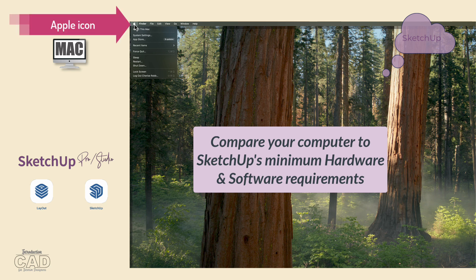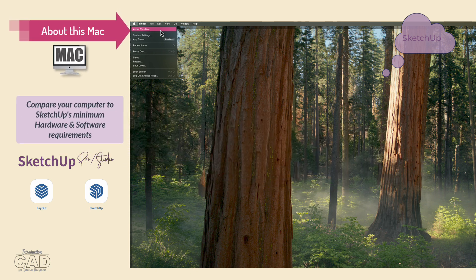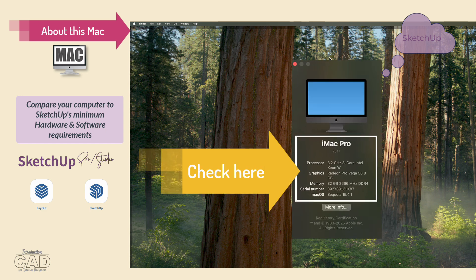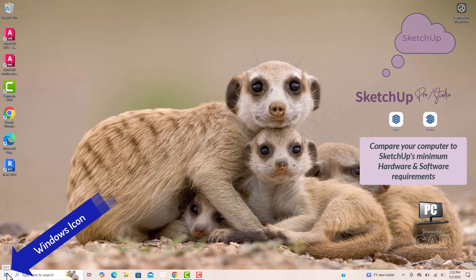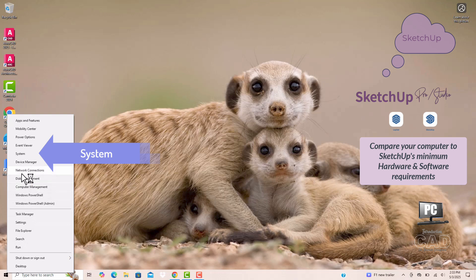Once you've taken note of the hardware and software requirements SketchUp recommends, it is time to check your computer for a comparison. To do this on a Mac, locate the Apple icon in the upper left-hand corner of the monitor screen, pick on the Apple, and then choose About this Mac from the menu of options. To check the system resources on a PC, go to the Windows icon located in the bottom left-hand corner, right mouse click on it, and from the menu of choices, select System.